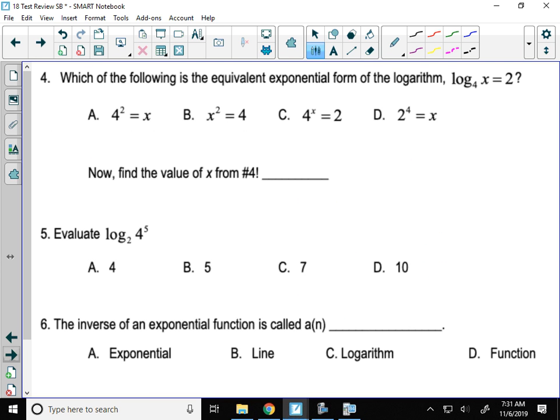Alright, number 4, which of the following is the equivalent exponential form of the logarithm log base 4 of x equals 2? This is using the definition of the logarithm. Remember, we called it the Curly-Cube method. Go up and around. So you start at the base 4 to the 2nd power equals x. So that would be option A.